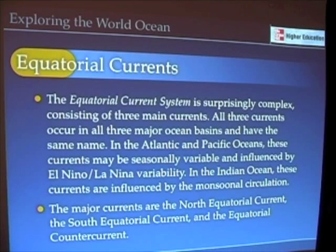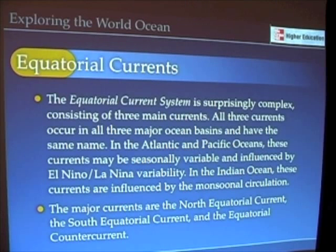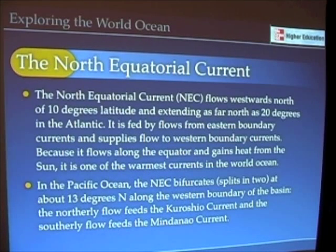Let's talk a little bit — I don't want to talk too much about the equatorial current system, even though it's complex, and even though this is a place where we have El Niño and La Niña variability, which we've already gone through. It does include the monsoonal circulation, so I do want to just mention it a little bit.